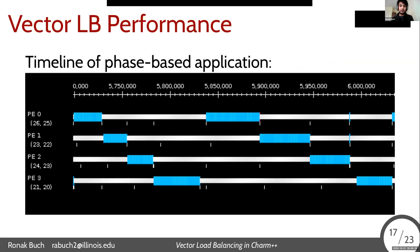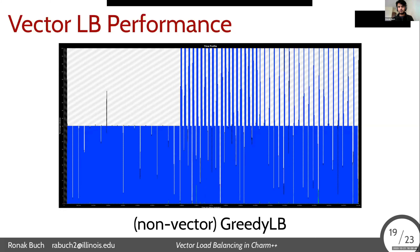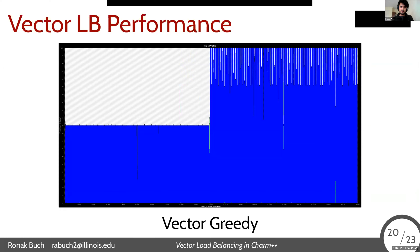Another view on the same thing: a CHARM application with distinct phases of chares. Using a time profile — x-axis is time, y-axis is total processor utilization — without a load balancer we see a lot of idle time. With load balancing we get spikes up to 100% utilization but gaps between phases because the phases themselves aren't well balanced. But with the vector version of the greedy load balancer, we get much closer to 100% utilization after the load balancing decisions are made halfway through execution. It's clear that in these test applications we get a lot of benefit from vector load balancing and these new strategies.